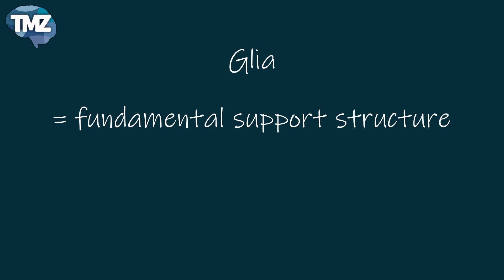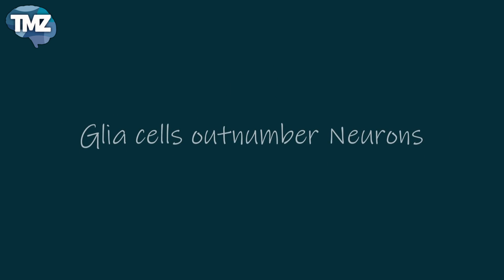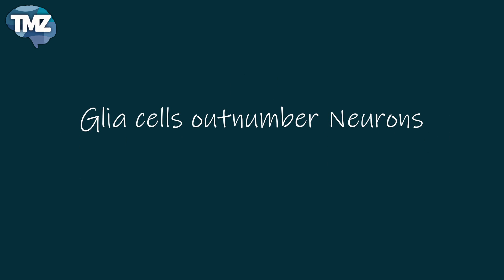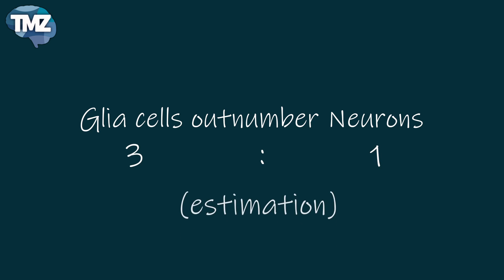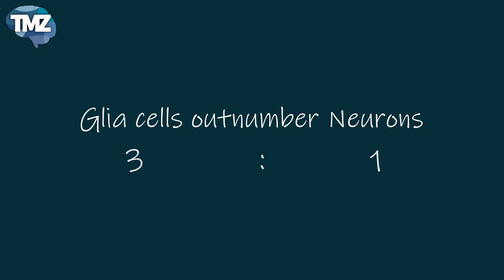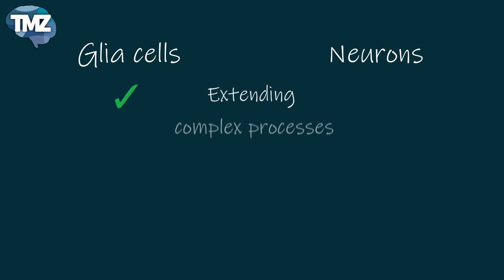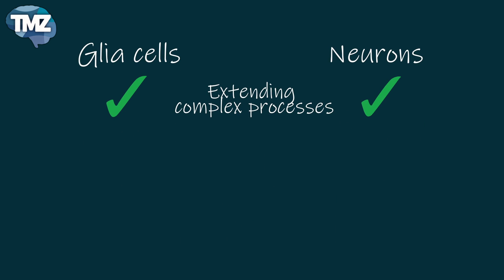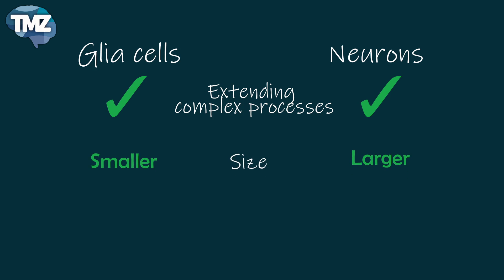Glial cells have many different roles, and there are in fact many more glial cells than there are neurons in the brain, outnumbering them by a ratio of perhaps 3 to 1. Although glial cells also have complex processes extending from their cell bodies, they are generally smaller than neurons and they lack axons and dendrites.